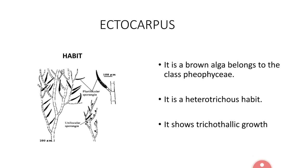Ectocarpus is a marine alga. It belongs to the division Algae, Class Phaeophyceae, Order Ectocarpales, Family Ectocarpaceae, Genus Ectocarpus.